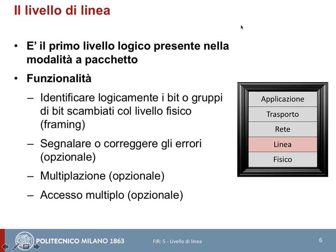Quali sono i servizi offerti dal livello di linea? Il primo servizio, che generalmente si chiama framing, è il servizio per cui l'entità di livello di linea è in grado di forgiare una trama di livello 2 e, lato ricevitore, riconoscere quando la trama di livello 2 inizia e quando finisce. Questa funzionalità di framing è comune a tutti i protocolli o famiglie di protocollo implementati a livello di linea nell'internet.